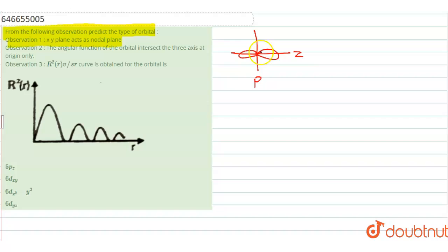And the y axis passing straight through them will be the y axis. So Pz does have xy as a nodal plane. This is for Pz.